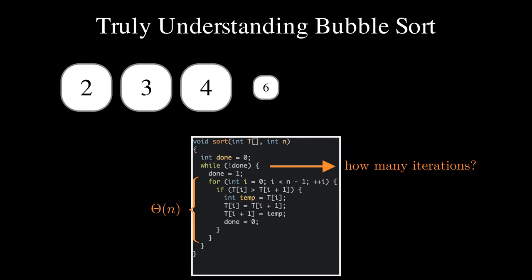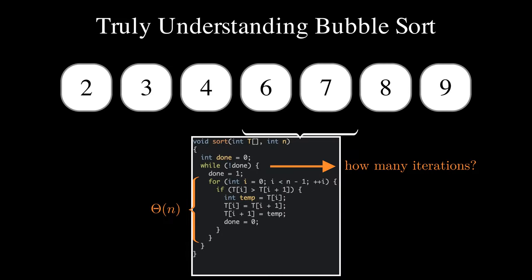In the best case, when the input array is already sorted, a single pass is enough, as no swaps are performed during the pass. In this case, the overall time complexity is one pass times theta of n per pass, which amounts to theta of n.